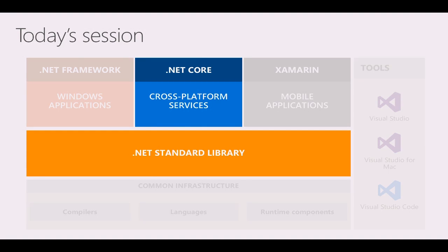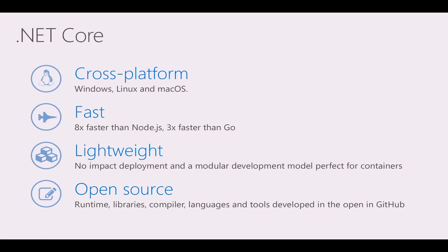Today I'm focusing on .NET Core and .NET Standard. There's another session on Xamarin. We talked about tools and containers in the general session this morning. So let me start with .NET Core — why didn't we just take .NET Framework and make it cross-platform? Nothing is impossible in software, but .NET Core was born for four specific reasons.